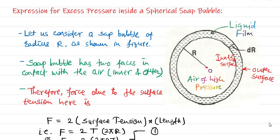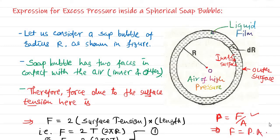For finding that, we simply use the basic definition of pressure — pressure is force per unit area — and from that we get: force is equal to pressure into area. First we will find the force due to the surface tension, and then we will find the force due to the excess pressure.